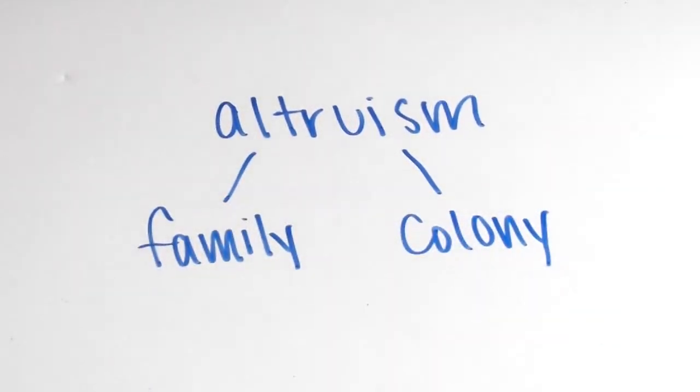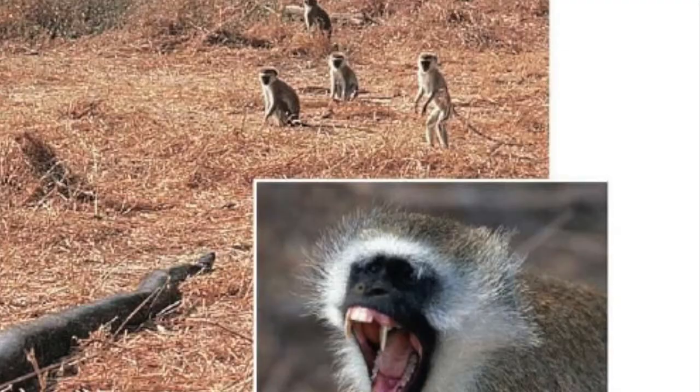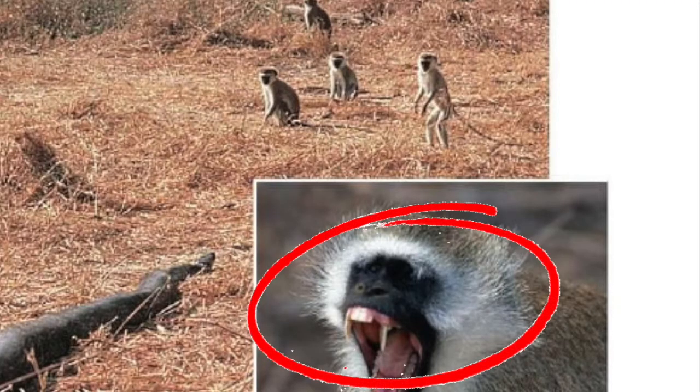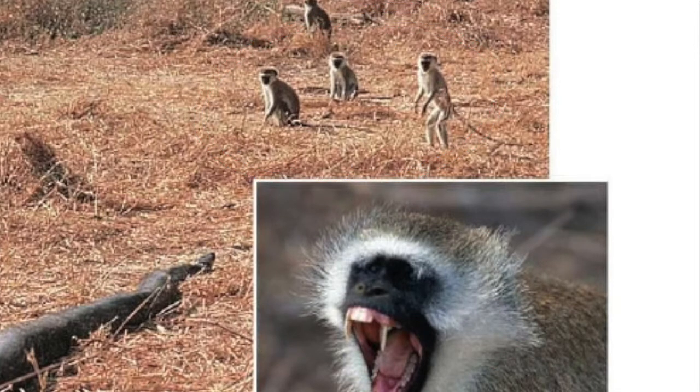One example of this would be of the vervet monkey. When a predator comes nearby, one of the monkeys usually makes a call to alarm the other monkeys that a harmful presence is close. At the same time, it's calling attention to itself, making it easier for the predator to locate that specific monkey.